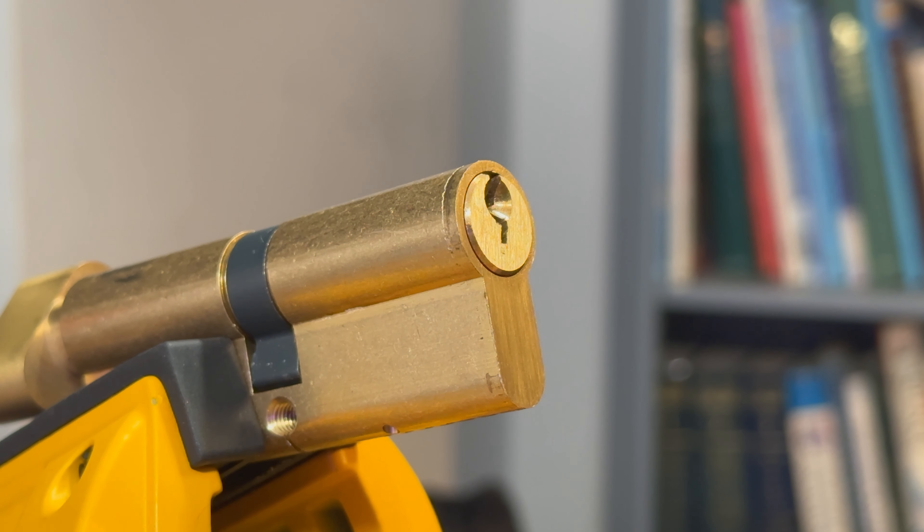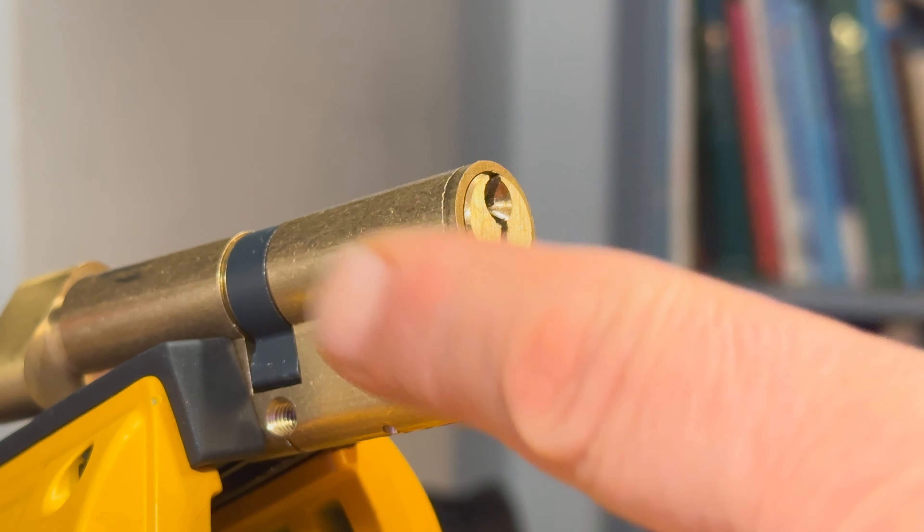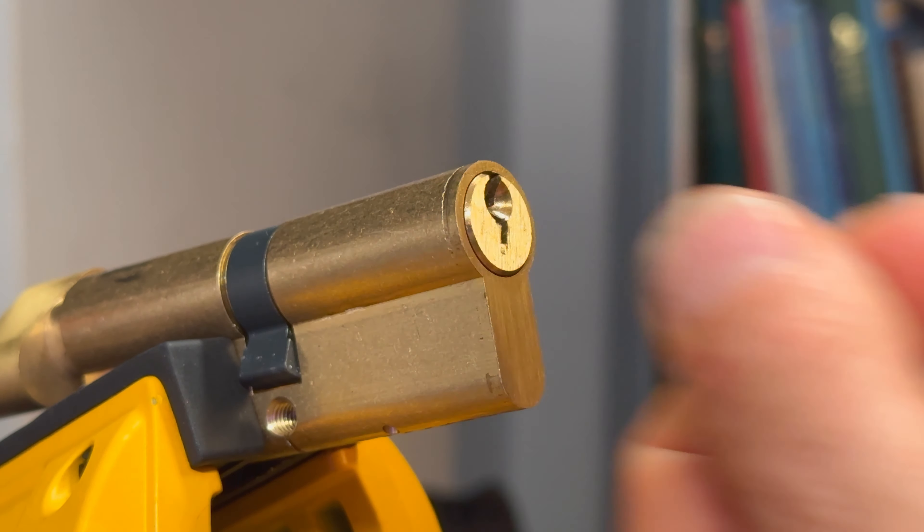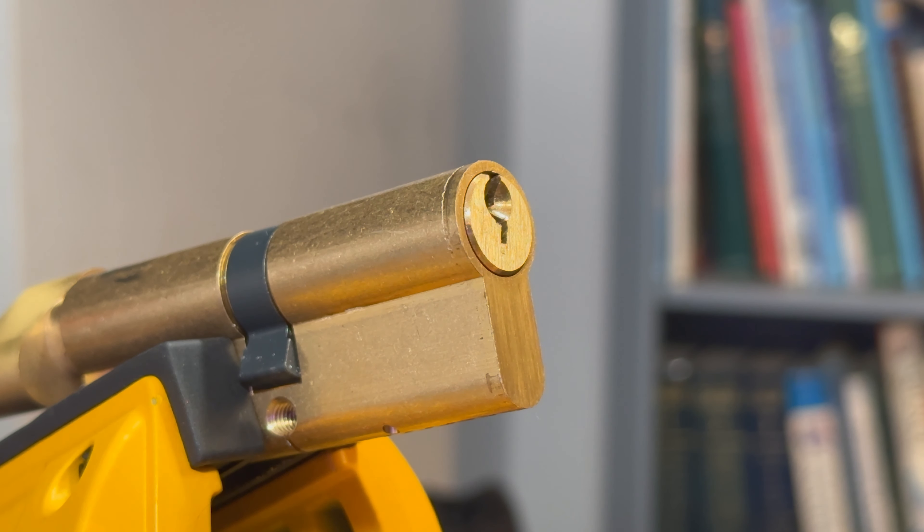This brass colored lock doesn't have any branding on it. It's got a thumb turn but there's no other markings on here. It's just literally a plain brass colored cylinder.